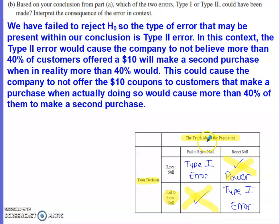Our work in Part A was that we failed to reject the null. What if the truth is that we should have rejected it? What if more than 40% of customers would repeat a purchase if given a $10 coupon? This is the type of error we could have in our conclusion. Because we failed to reject the null hypothesis, we could have encountered Type II error.